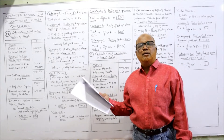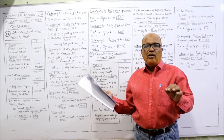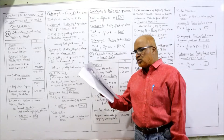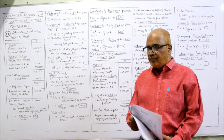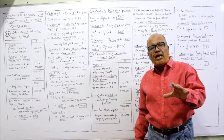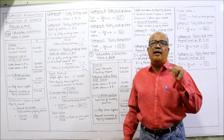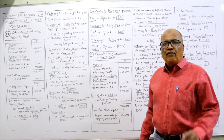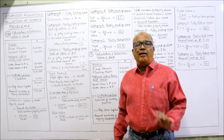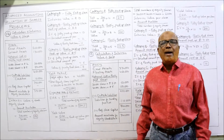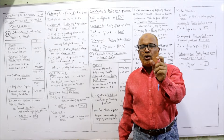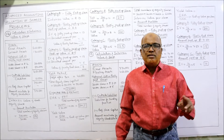Calculate the value of each type of equity share by the net assets backing method (excluding goodwill) — that means intrinsic value — and also by the yield basis method. This is the first problem where we are asked to calculate both intrinsic value and yield value. The first new point is: we have to convert the partly paid shares into fully paid shares by making a notional call — an imaginary call. For example, the second category has 10,000 shares of 10 each on which 8 rupees are paid up.